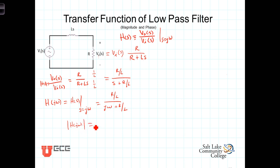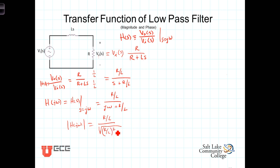The magnitude of the frequency response is equal to the magnitude of the numerator divided by the magnitude of the denominator. The numerator is a pure real number, so its magnitude is just R divided by L. Down in the denominator, the magnitude of this complex number is the square root of the real part squared plus the imaginary part squared — the square root of R over L quantity squared plus omega squared. Remember we don't square the J, so it's not minus omega squared, it's just omega squared.